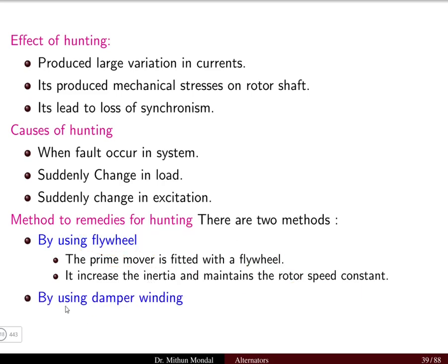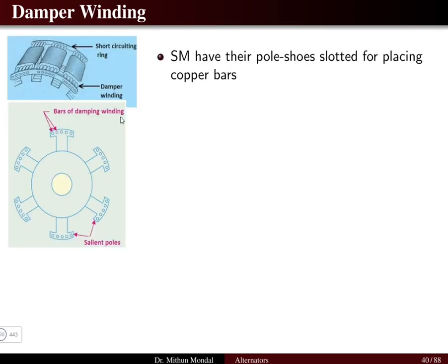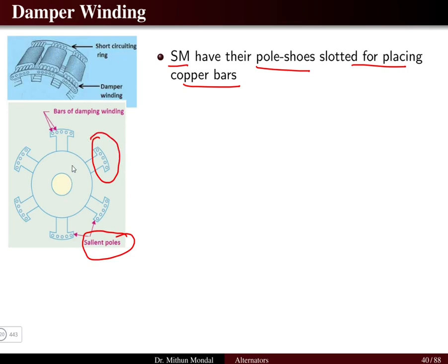The second method is by using damper winding, which is generally used to reduce the phenomenon of hunting. A synchronous machine has its pole shoe slotted for placing copper bars. For a salient pole synchronous machine, slots are available on the rotor pole shoe. These slots are present on the pole shoe of the salient pole synchronous machine.